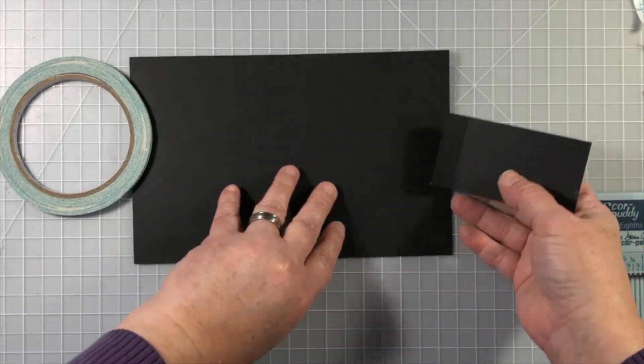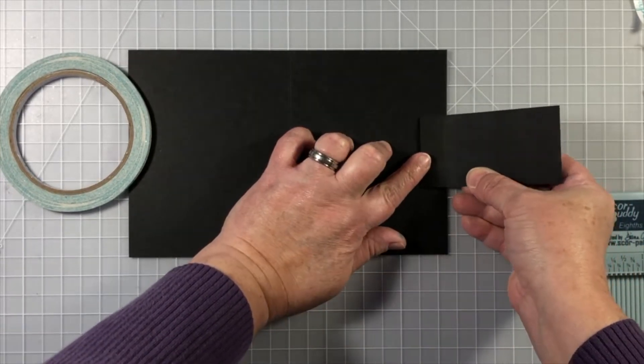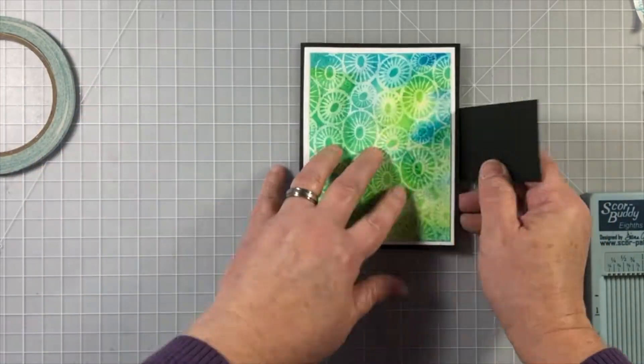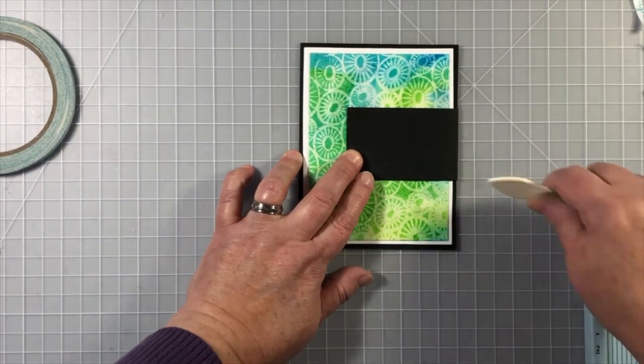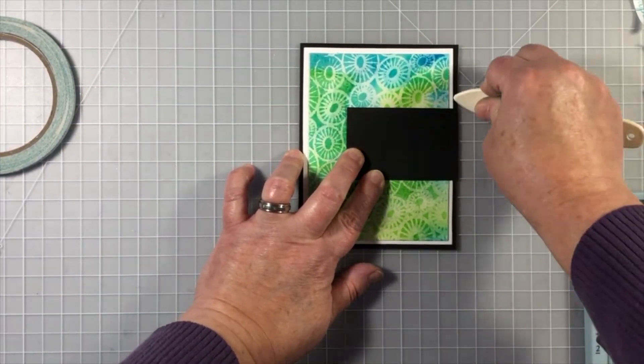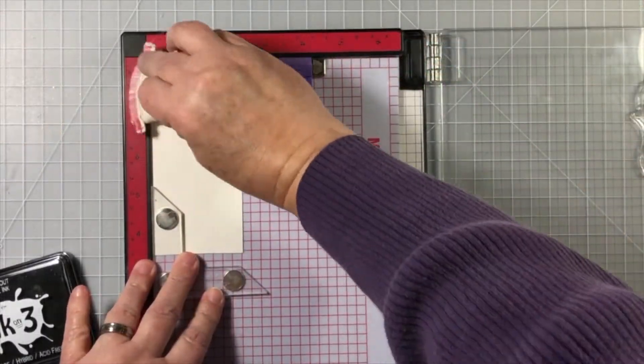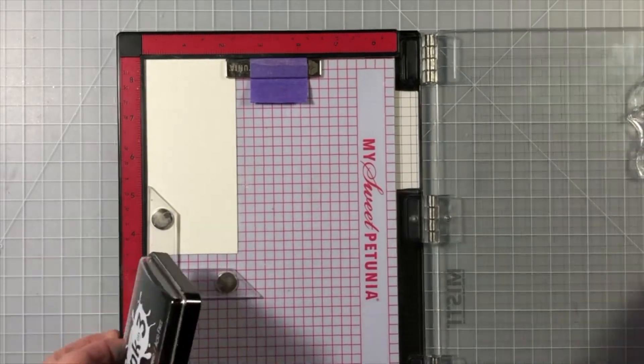So I'm adhering that down with some more double-sided tape. This is really strong sticky stuff. By giving it that little score lift spot, I can now have this little flap that is going to hug the front of the paper.